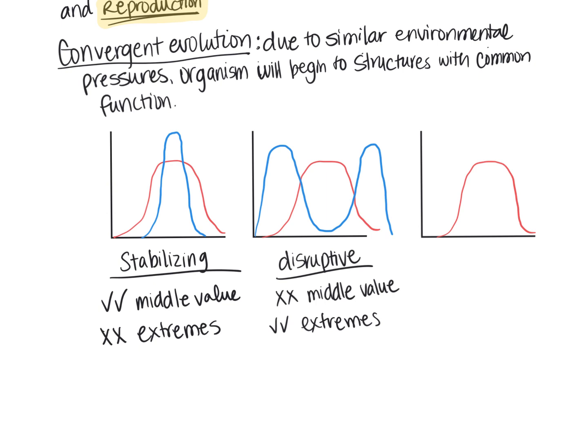The last model is what is known as directional selection. And in directional selection, one of the extremes is going to be selected against, and the other extreme is going to be favored. So it could actually look in two different ways. So in this first example, let's say that the lower extreme is favorable in the environment.